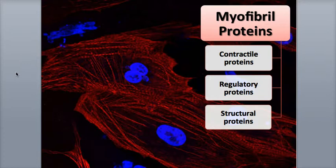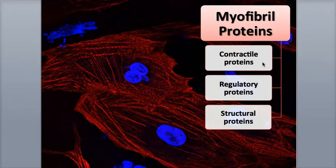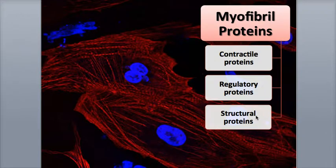Now let's take a look at the different types of proteins that make up the myofibrils. There are three types of proteins organized in two categories: the contractile proteins, which are directly involved in muscle contraction and create muscle tension; the regulatory proteins, that turn muscle contraction on and off; and the structural proteins, which help align the thick and thin filaments so their contraction works smoothly and efficiently.